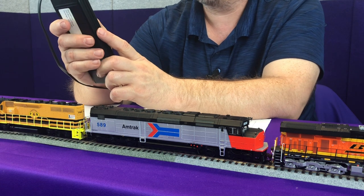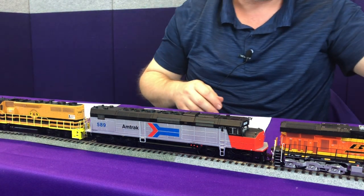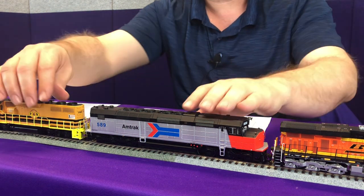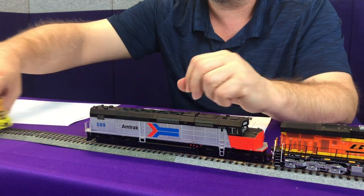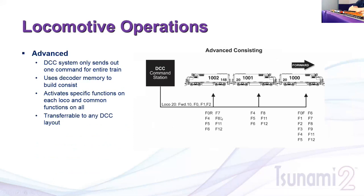To take locomotives out of a basic consist, you select the locomotive and hit MU minus. If you don't remember which locomotives are in the consist, or which is the lead unit, you can't properly clear it. There are a lot of things you won't get using a basic consist with your command station — no function commands to trailing units, and non-transferable consist setup.